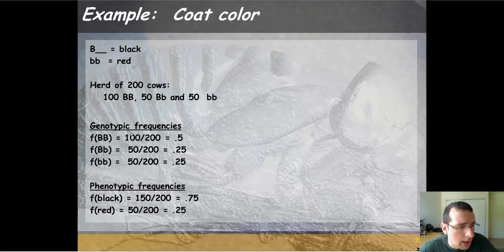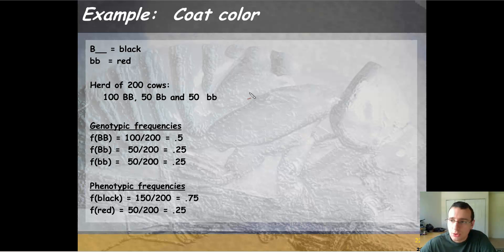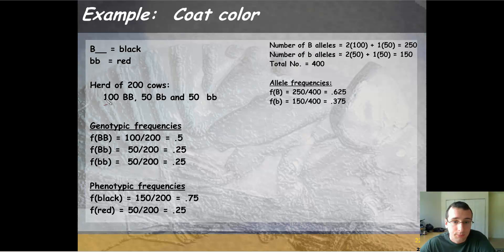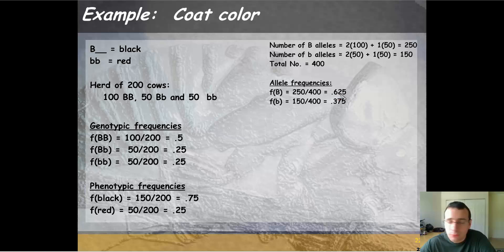Now we can also calculate the allele frequencies. Remember that the allele numbers are going to be twice as many as the population count, because each member of the population is diploid and has two alleles each. So with 200 cows, you're going to have 400 alleles total. For the dominant allele, you count the homozygous dominant twice — so 2 times 100 — plus the big Bs in the heterozygous once, so 50. That gives you 250 dominant alleles out of 400, which is 0.625 or 62.5%.